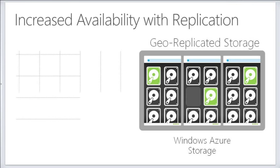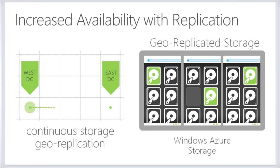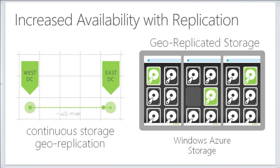By default when you create things, we're going to have geo-replicated storage — three copies at one data center and three copies at another, for a total of six copies. It doesn't really cost a whole lot more to do that. The standard charge goes from $0.07 per gigabyte for locally redundant storage to $0.095 per gigabyte for geographically located storage. The data centers are more than 400 miles apart. The reason is: if there's a calamity — a natural disaster or some other catastrophe — we don't want that taking out both data centers at the same time.